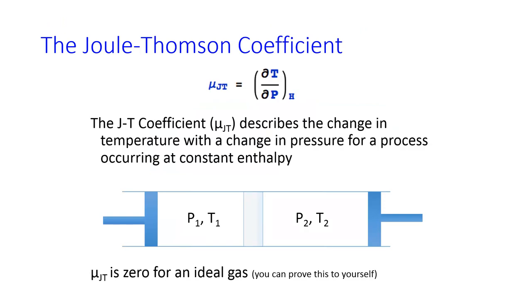The Joule-Thompson coefficient is defined as, for this process, the partial derivative of temperature with respect to pressure for this process at constant enthalpy. So for an ideal gas, mu JT, the Joule-Thompson coefficient, should be zero.